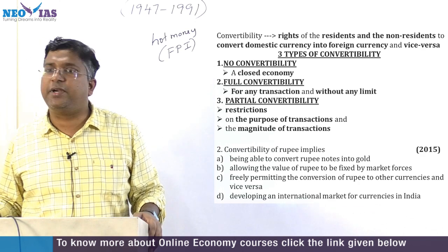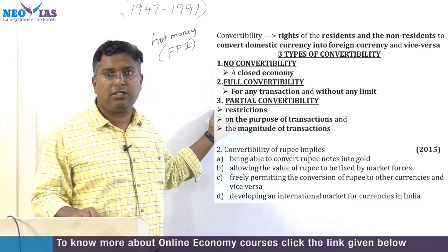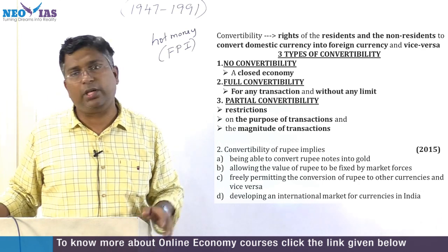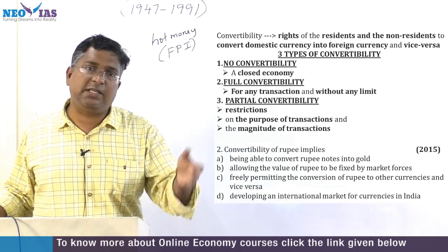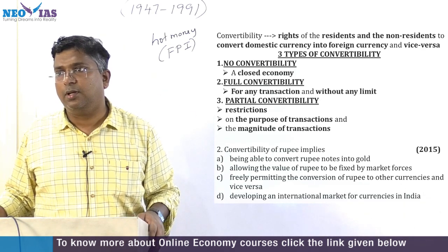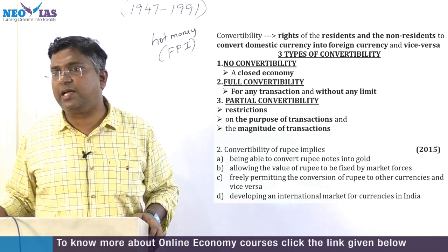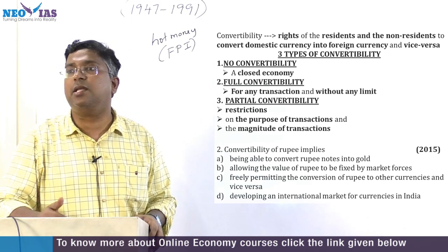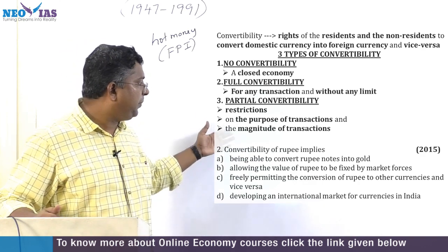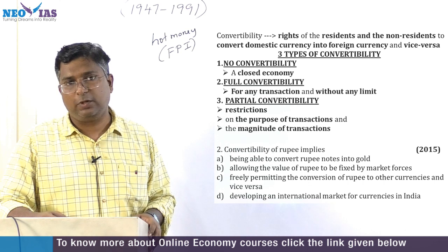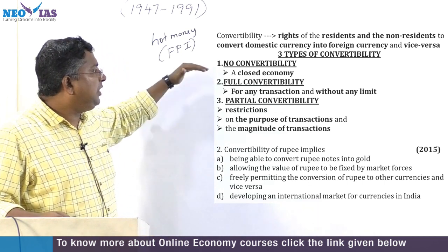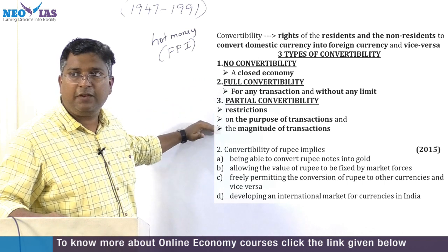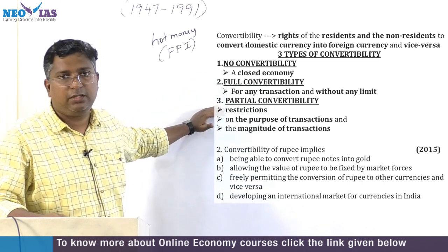Full convertibility means freedom to convert currency without any restriction and without any limit. Partial convertibility, which India follows, has many restrictions — on what purpose the currency is being used and the value of the transaction. For example, for studying abroad it may be allowed, but for purchasing foreign assets there is a limit of 250,000 dollars per year per individual. India was under a no-convertibility regime during the closed economy period, but after economic reforms we shifted to partial convertibility.